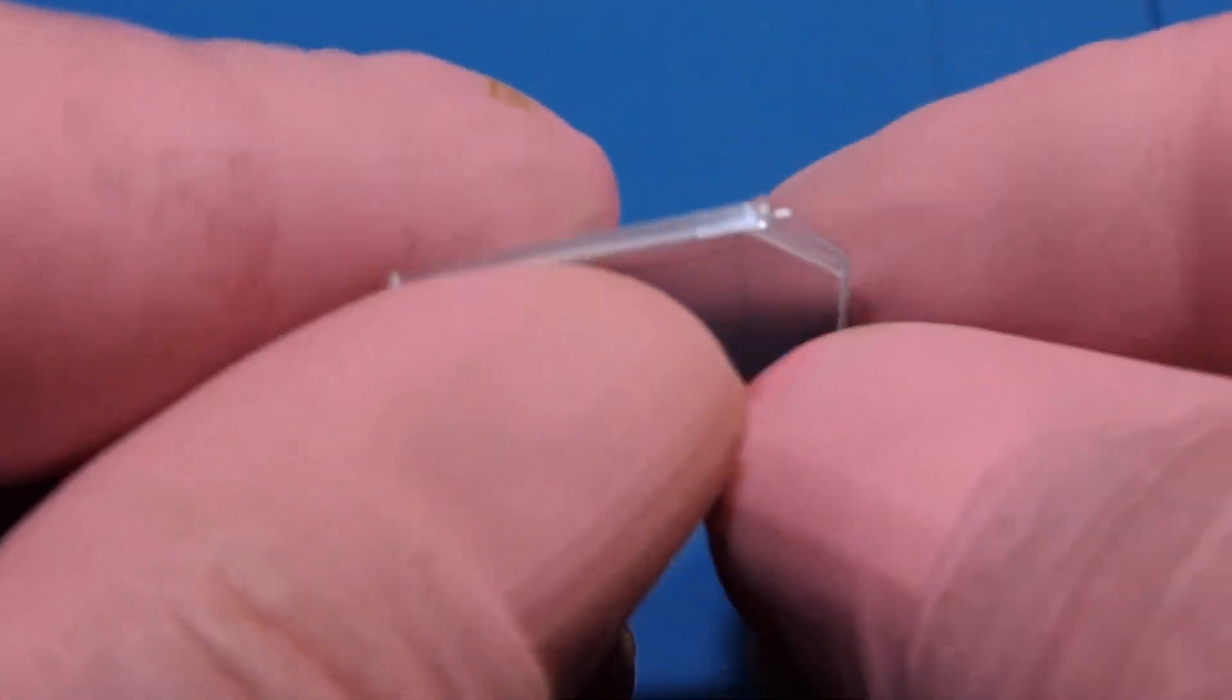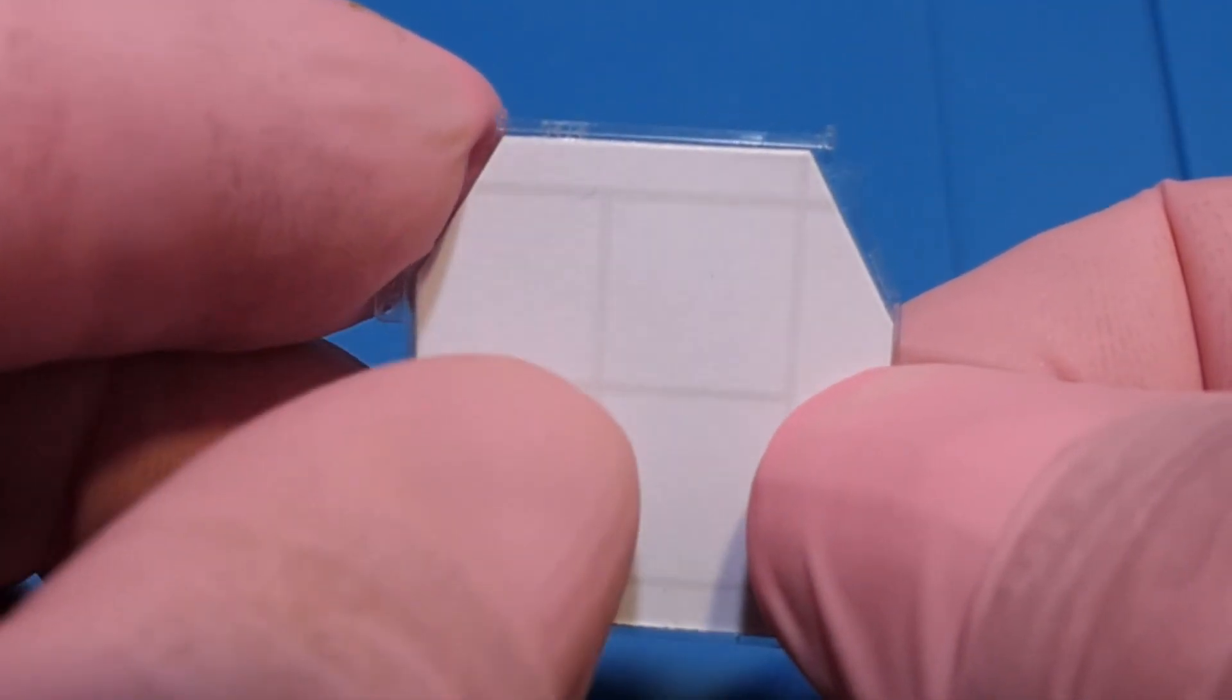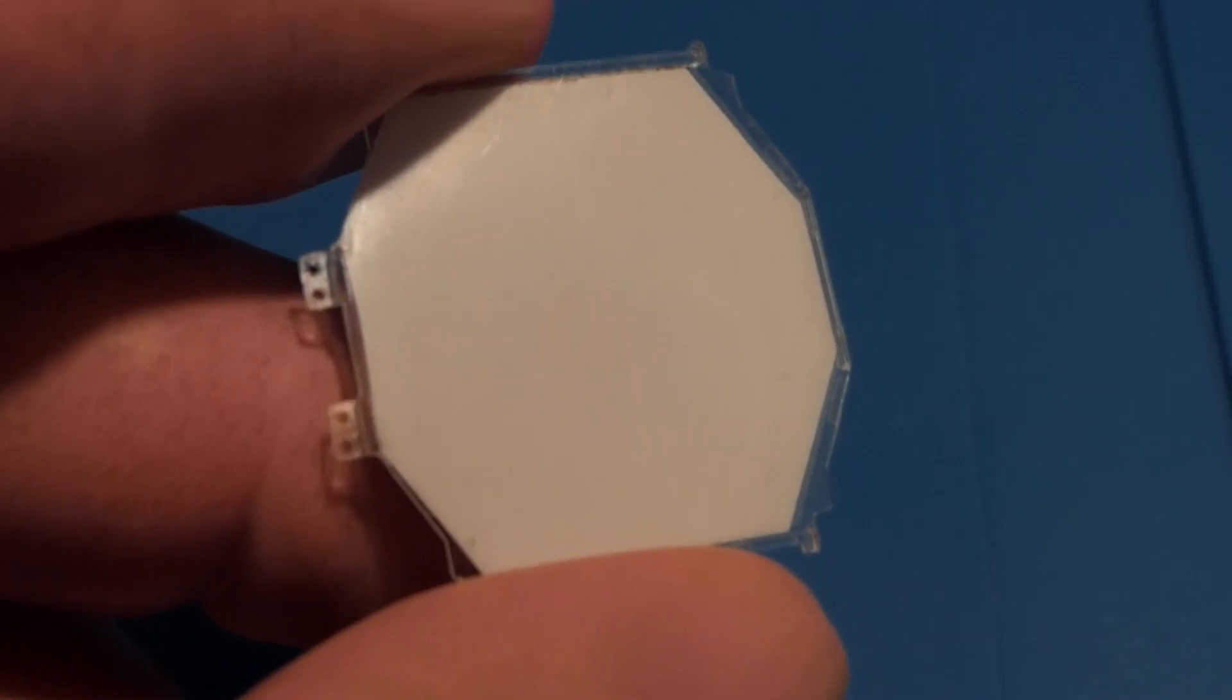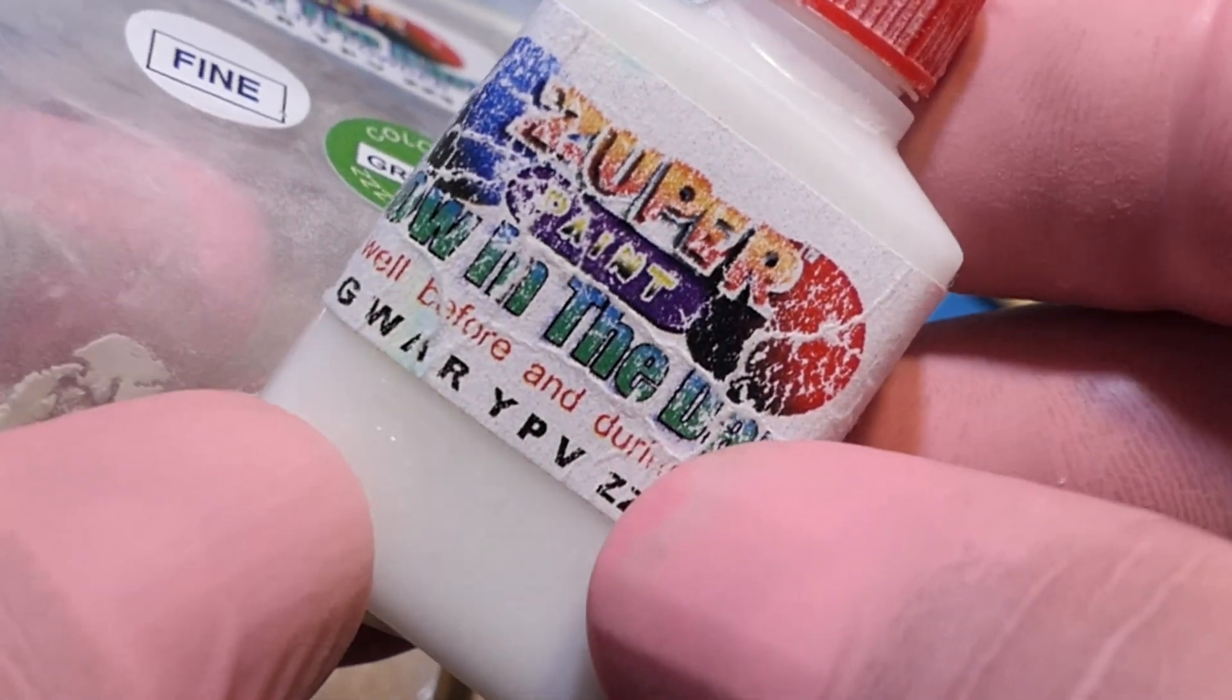These little pads here, one, two, three, and four, are the contacts for the tiny little LEDs. It has these tiny little springs. Now, I've just lost two of them. They've gone. They are so, so tiny. So, what I'm going to do, I'm going to use a little bit of paste and actually affix them directly to the board and see how that works.